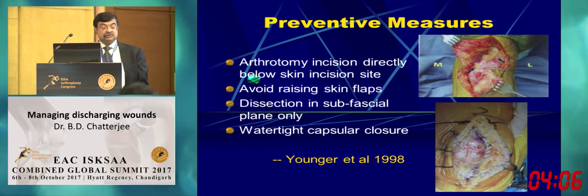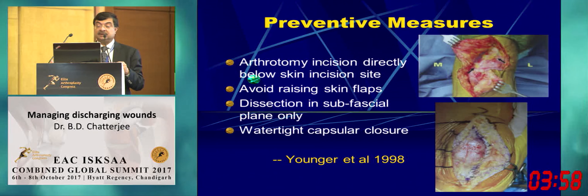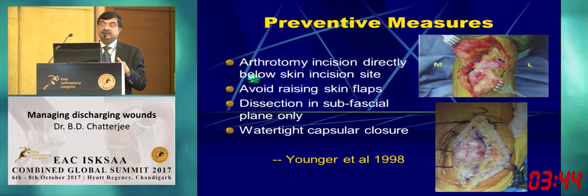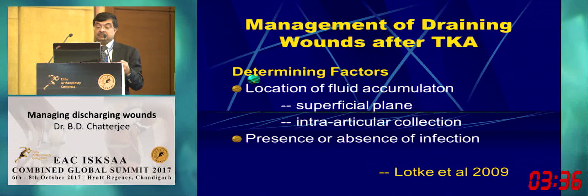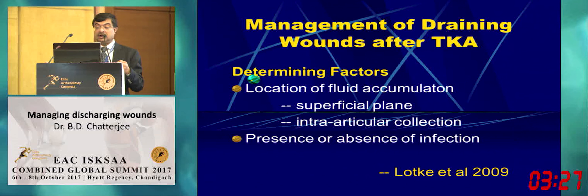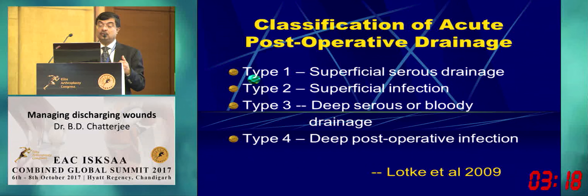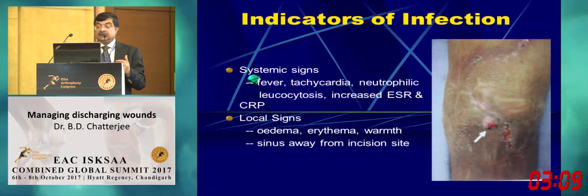To prevent wound problems: avoid raising skin flaps; closure should be absolutely watertight — leakage from capsular closure can lead to problems, so the surgeon should insist on closing the capsule personally. According to Lodke's paper, the two important factors are whether the collection is outside the capsule or intra-articular, and whether there is infection. There are four types based on the plane and nature of the collection. Systemic signs of infection include fever and tachycardia with raised inflammatory markers. A sinus located away from the incision line is a clear indicator of infected collection.